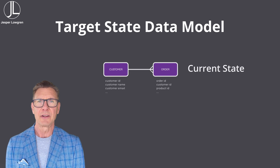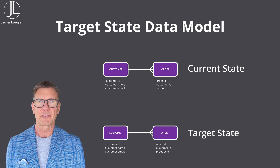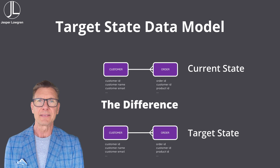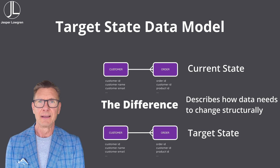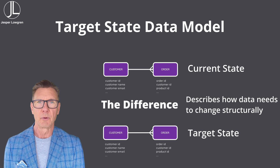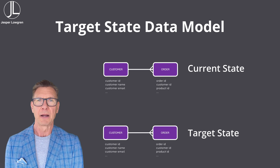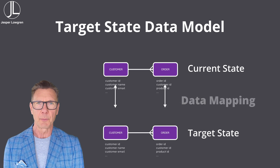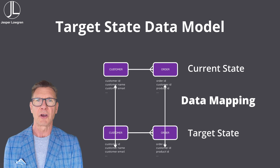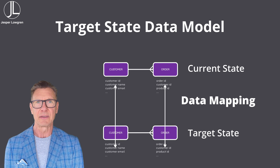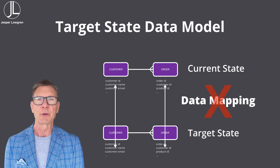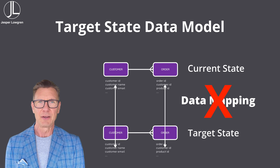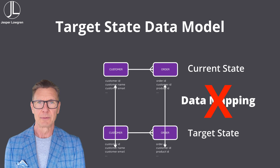The difference between the current and target state data models shows how data needs to change structurally between the source and target state. But most data migrations go off the rails if they now start to map data between current and target state entities and attributes, because something very important is missing — which is covered in Success Factor 4.